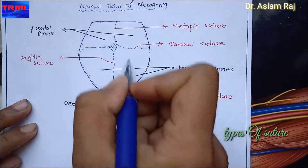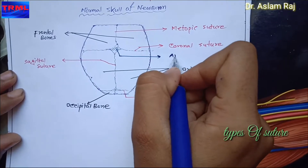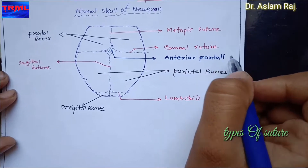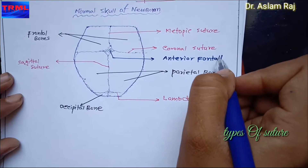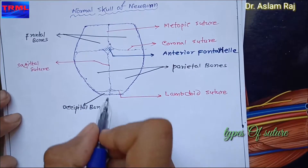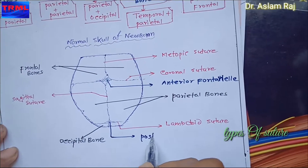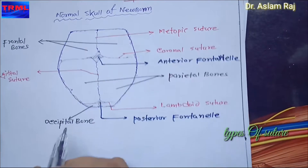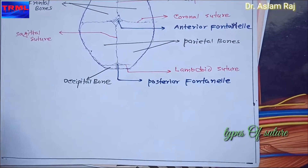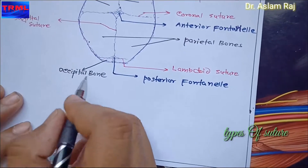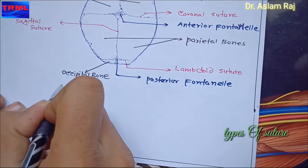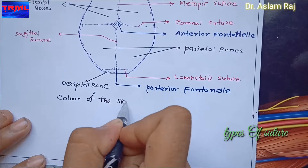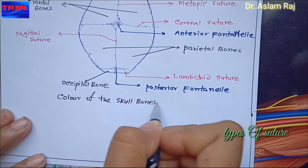We can also see two fontanelles on the skull. This one is the anterior fontanelle, and this one on the down side is the posterior fontanelle.